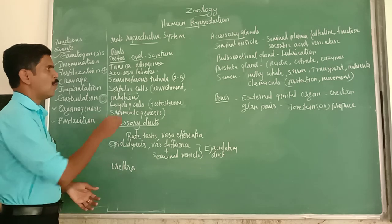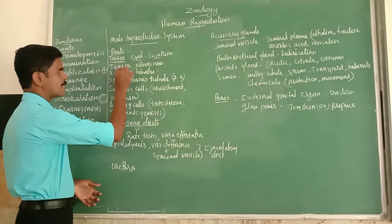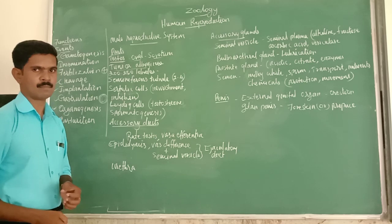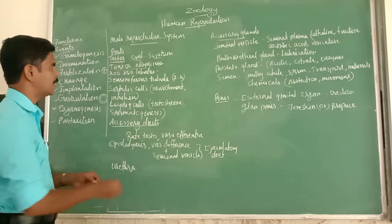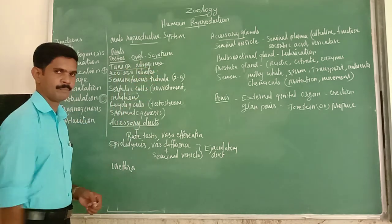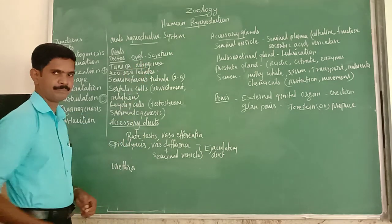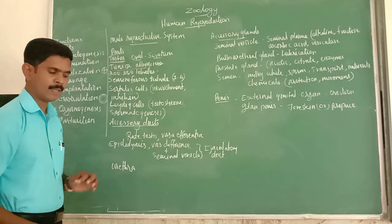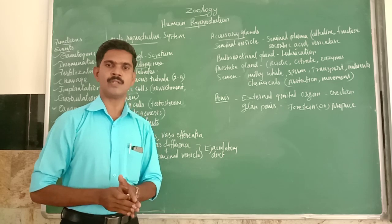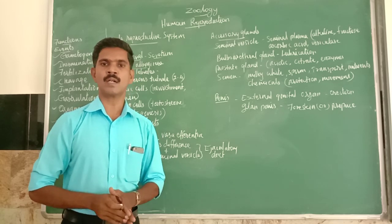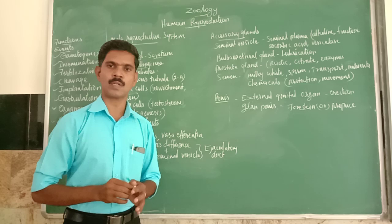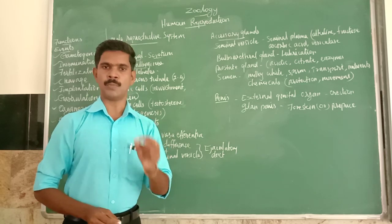The outer surface of the testes is covered by a membrane called the tunica albuginea. Inside, the testes is divided into 200 to 250 small lobules.